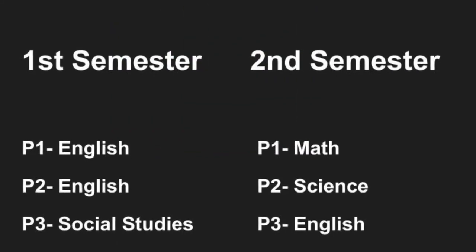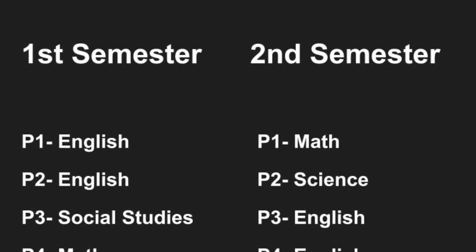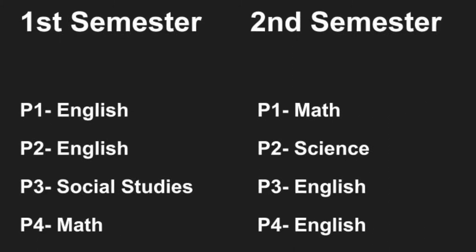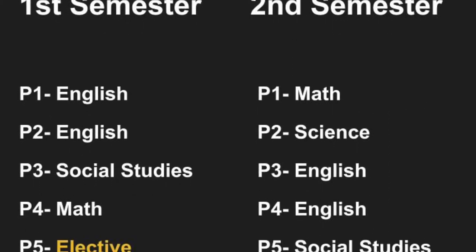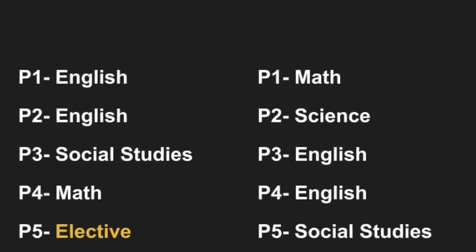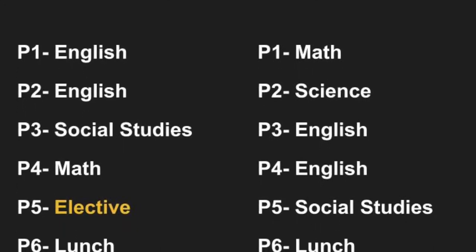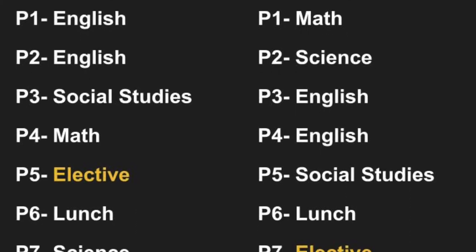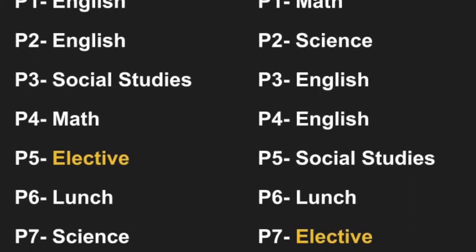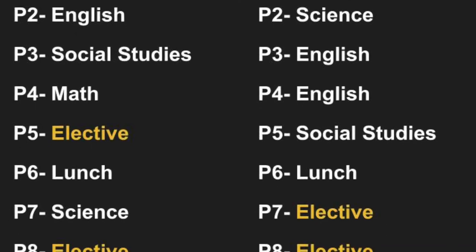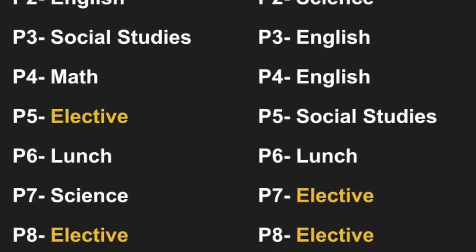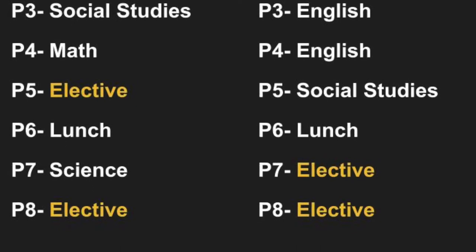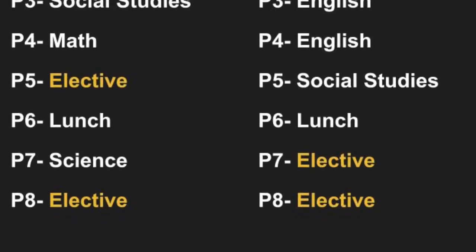Just like this year, you will have 8 periods in a day and the year will be divided into 2 semesters — the first half and the second half of the school year. Your English, Science, Social Studies, and Math classes will all be scheduled for you, as well as lunch. Those are your core classes and will last all year long. In addition, you will have 2 class periods that need to be filled with elective classes. Let's take a look at the form and the elective classes that are available.